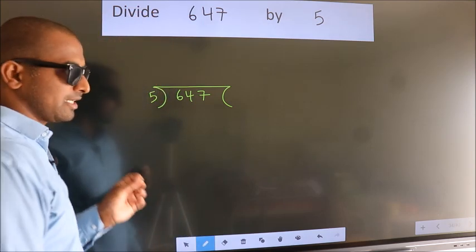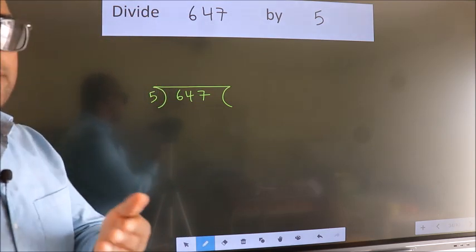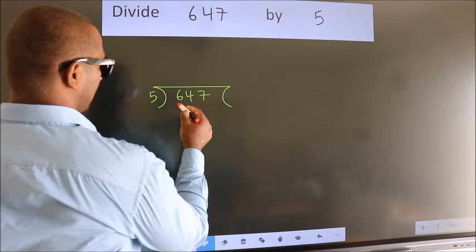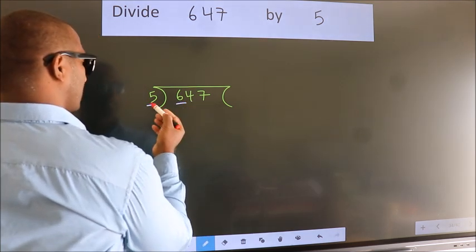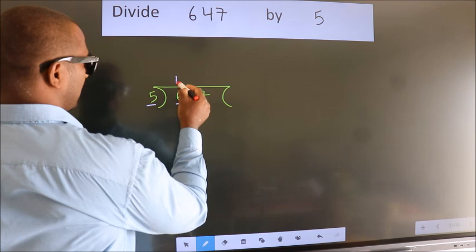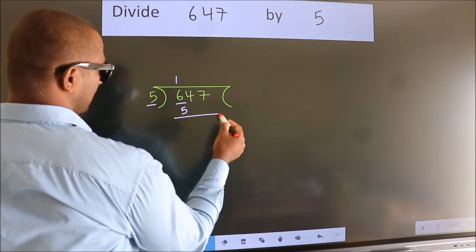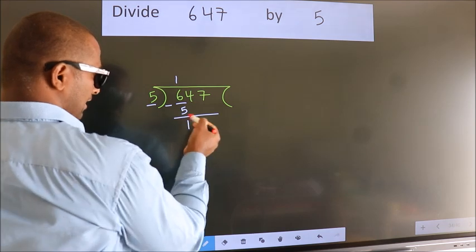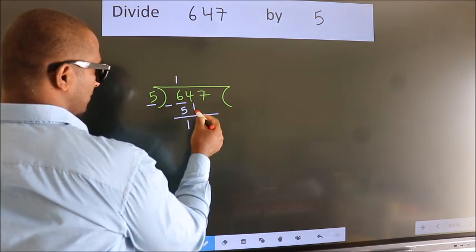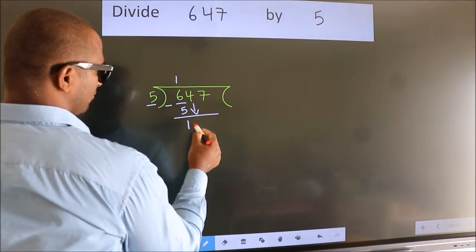This is your step 1. Next, here we have 6. A number close to 6 in the 5 table is 5 times 1, which is 5. Now we should subtract and we get 1. After this, bring down the beside number, so 4 comes down.